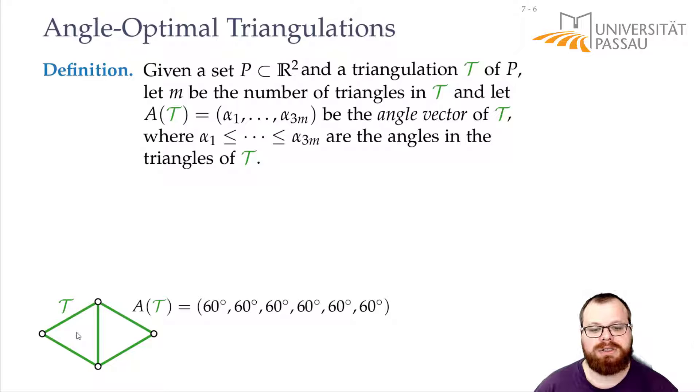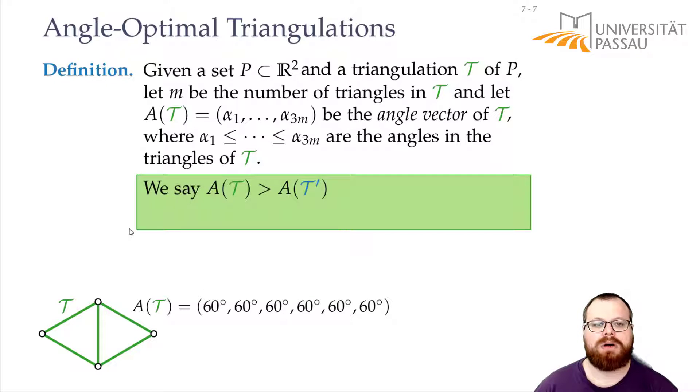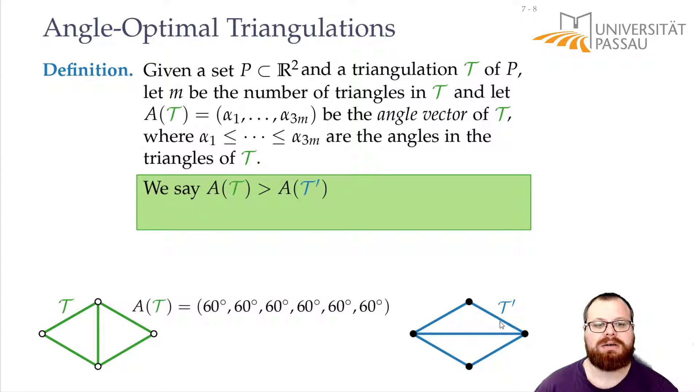For example, this is a very good triangulation. Here all the angles have degree 60. And now we say that one triangulation is better or it's larger than another triangulation. For example, this one here. If we compare the angle vectors. So we go through the angle vectors from left to right. And in the beginning they might still be the same, but at some point we find an angle that is larger in the first triangulation than in the second one. In this example it's already the first one.